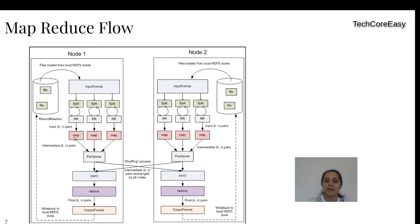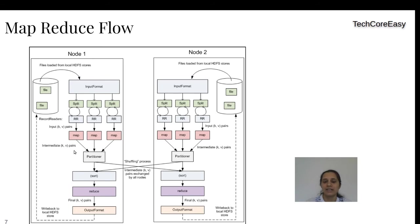The mapper gets input from the Record Reader, which uses the input file format specified in the job configuration to find the key and value pair. You may wonder: how many mappers and Record Readers execute for a given file? It totally depends on the number of blocks. In our example, the 320 MB file is stored in three blocks, so there are three splits, three Record Readers, and three mappers — one mapper per block.